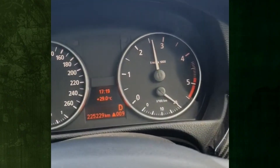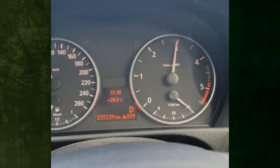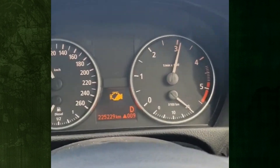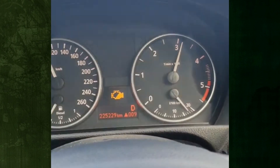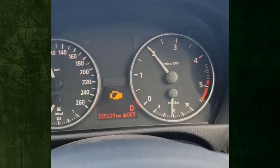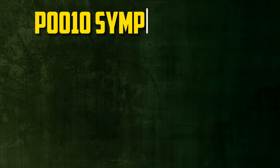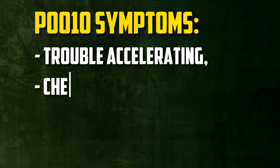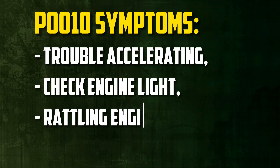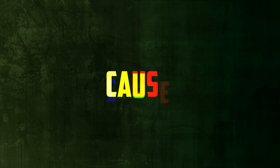A check engine light turning on is the first indication that something is wrong, but this trouble code also frequently causes performance problems. Here are a few of the potential symptoms: trouble accelerating, check engine light, rattling engine noise, and rough engine performance.